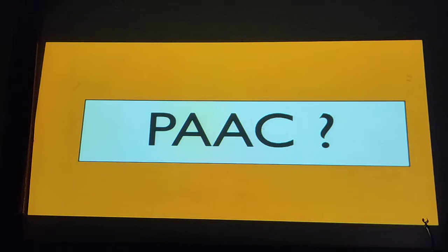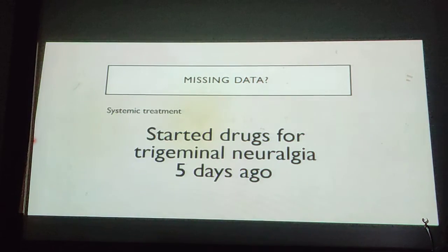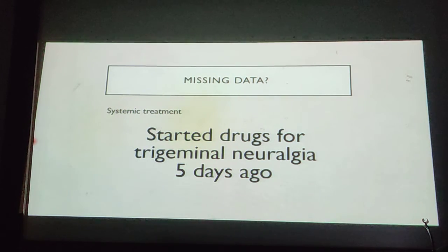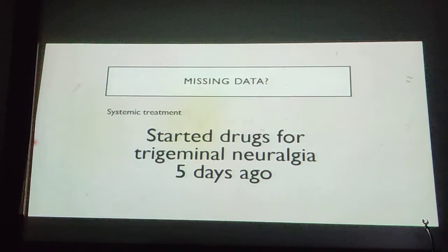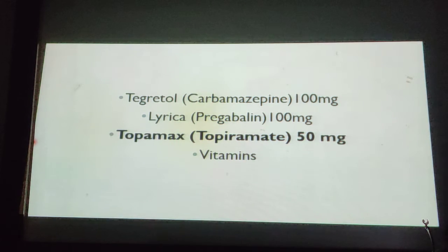So is this the case of primary acute angle closure, bilaterally at the same time, or do we have any missing data? On reviewing her systemic treatment, she was starting drugs for trigeminal neuralgia five days ago. Going deeply into these drugs, they are all anticholinergic or anticonvulsant medications. However, only one of them is a sulfa medication, which is topiramate.